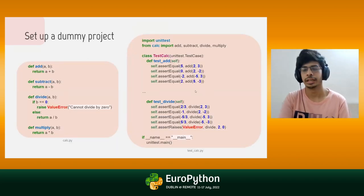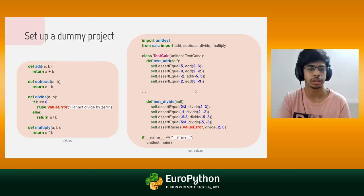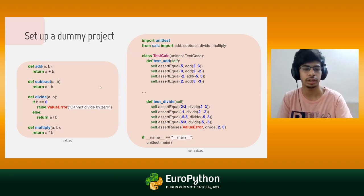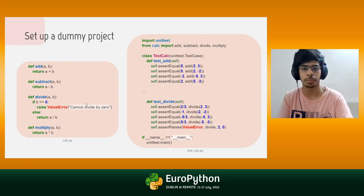Let's move to setting up a dummy project for this talk. A very simple project: a calculator file named `calc.py` and tests for that named `test_calc.py`. Right now everything should work fine and give 100% coverage.